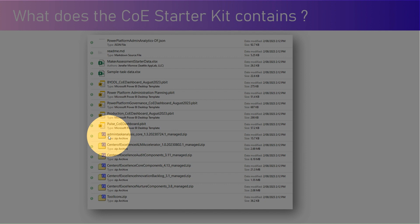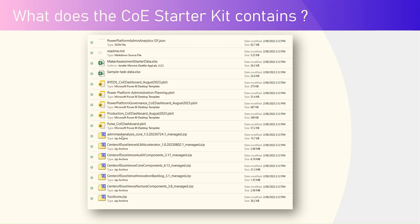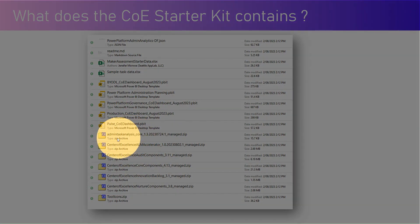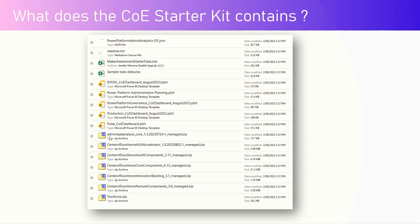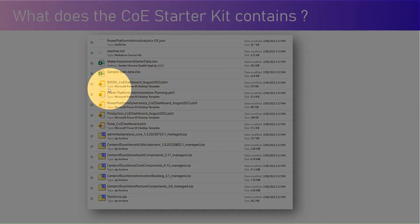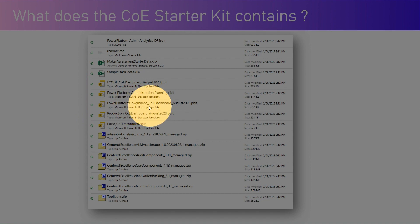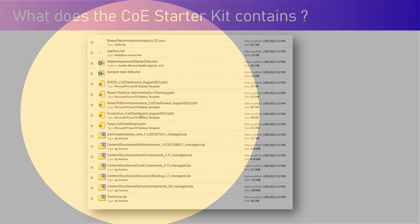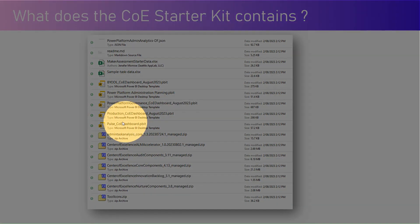Admin task analysis code is mainly a solution file which allows you to see a Power BI report that helps you analyze what different admin tasks can be done by a Power Platform administrator. As you can see, there are five reports in total. The main ones are the Governance Dashboard and the Production CoE Dashboard, which surface inventory information about your entire environment.